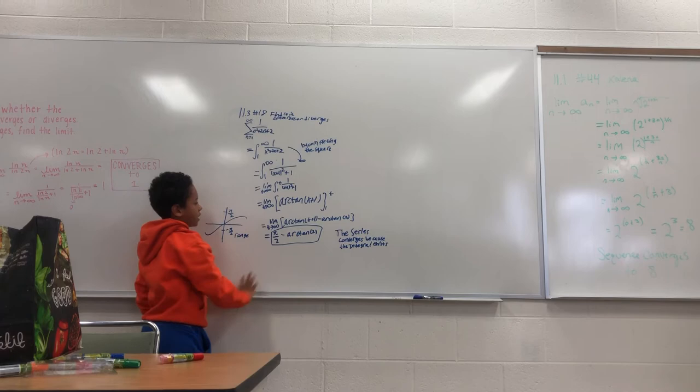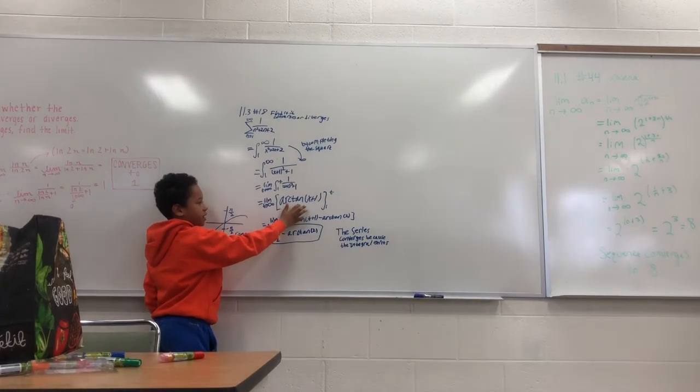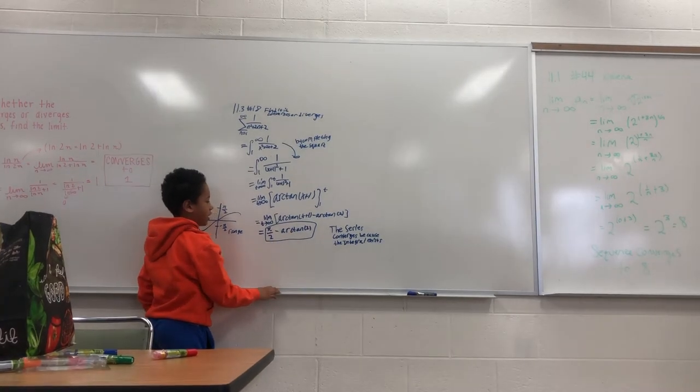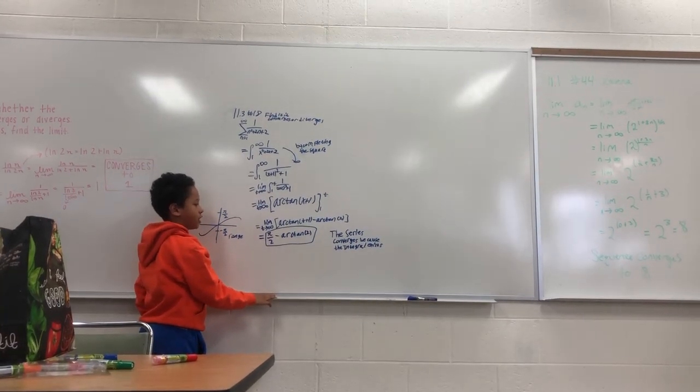And then we take the integral of that and we get arctangent of x plus 1 from 1 to t. Then you plug in t, so you get arctangent of t plus 1 minus arctangent of 2.